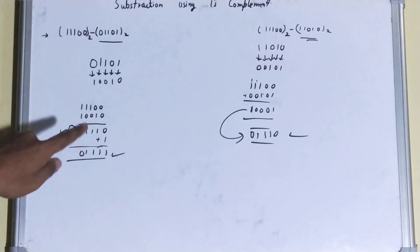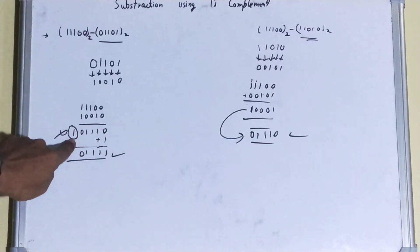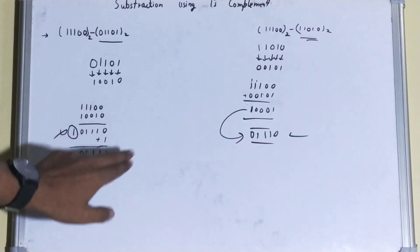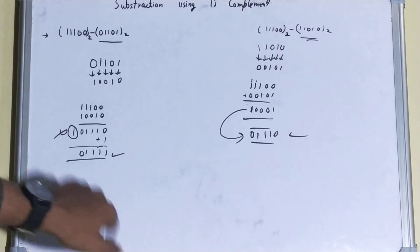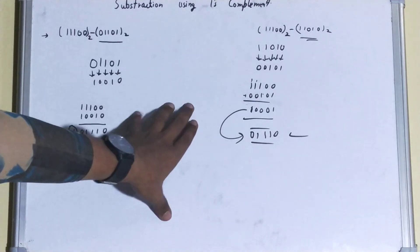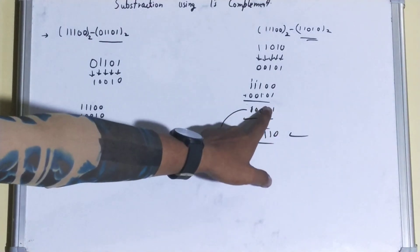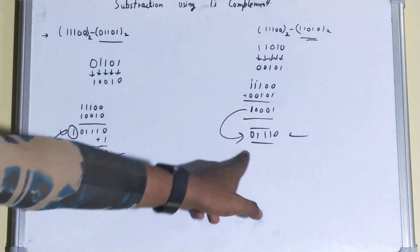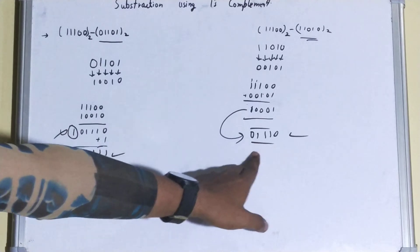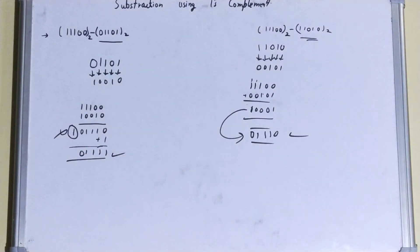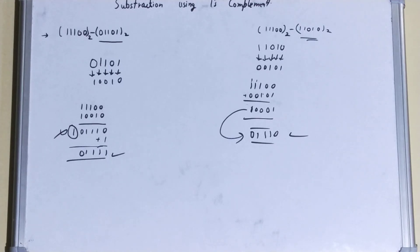So there are two cases: in the first case, if you get an extra carry, discard it and add 1 to get your answer. In the second case, if you don't get a carry, find the 1's complement of the result to get your final answer. That's all about subtraction using 1's complement. If you liked the video, hit the like button, don't miss subscribing, and thanks for watching.